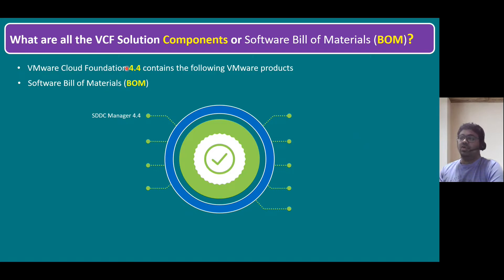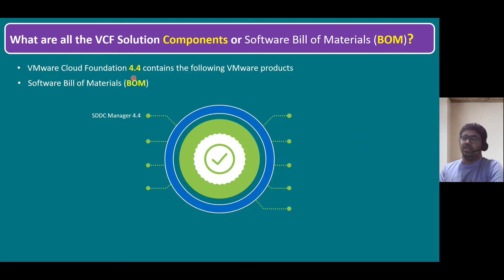VMware Cloud Foundation 4.4 — currently the very latest version most customers are using — is 4.4. And 4.5 was recently announced officially during VMware Explorer. It will be publicly available by this month end, or maybe year end or first quarter next year. So very soon we will be getting VCF 4.5. But until then, I'm explaining the 4.4 software components. Within the 4.4 software components, whatever products are included, all are VMware products only, and all are considered the Software Bill of Materials.